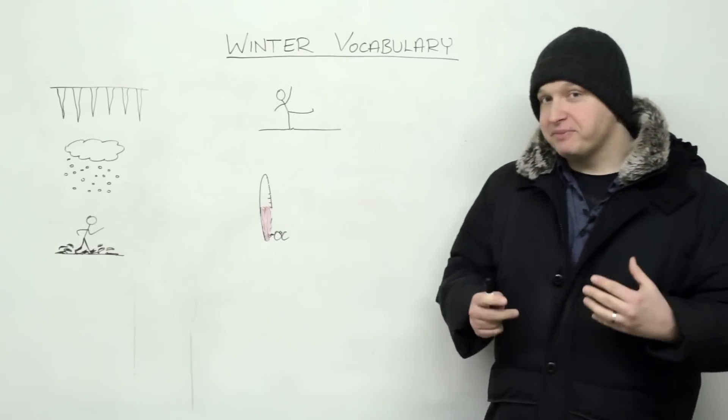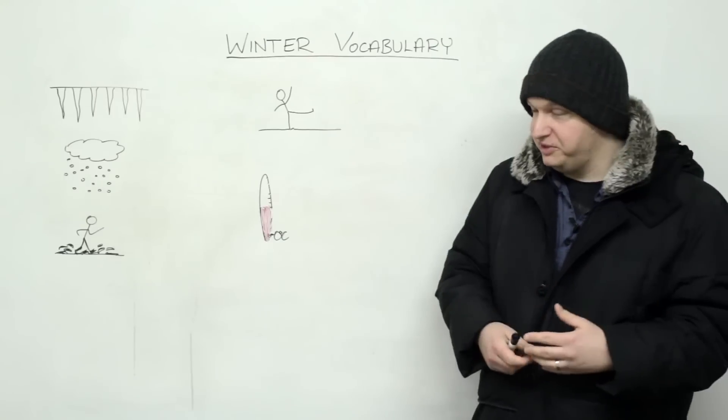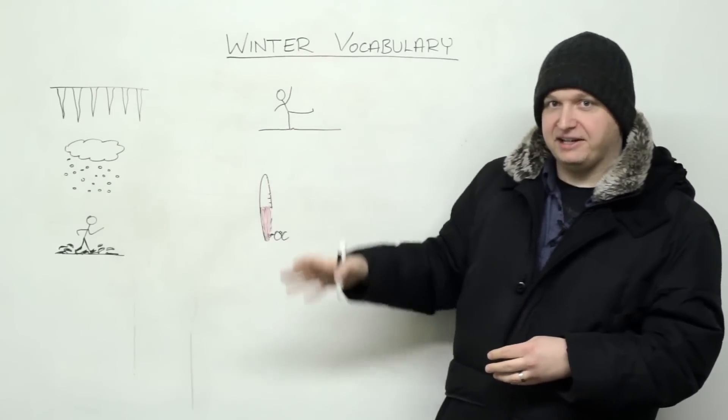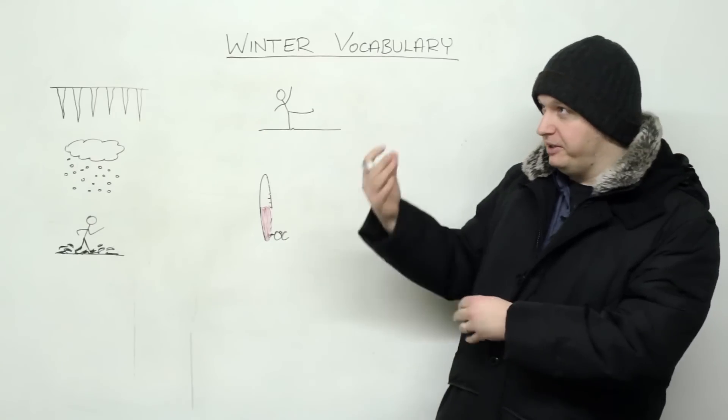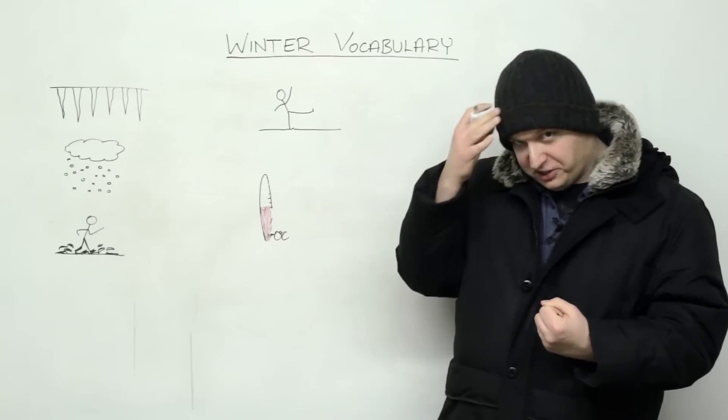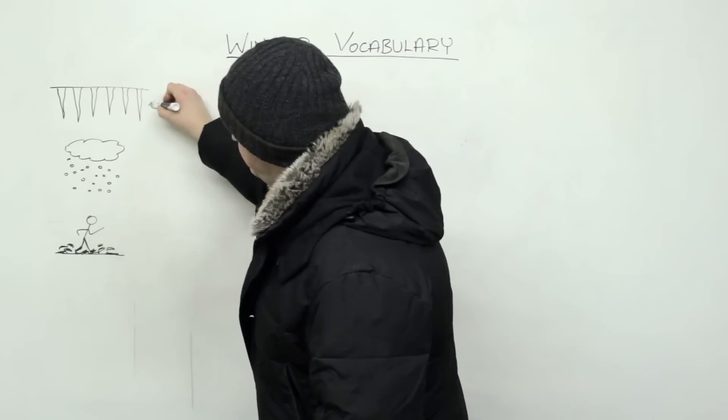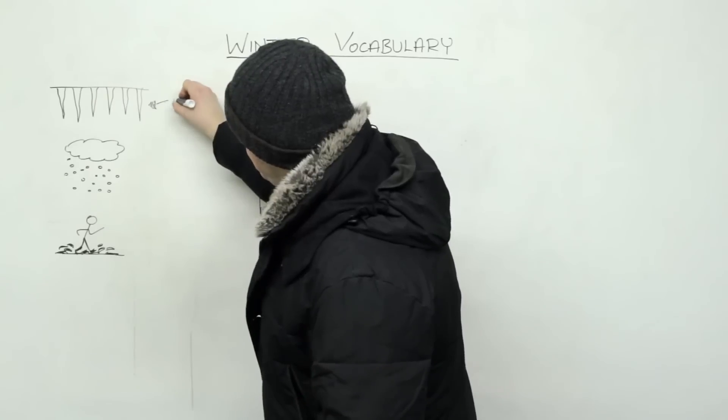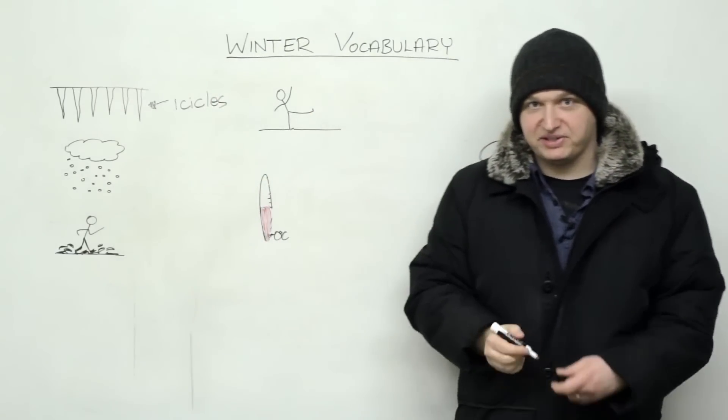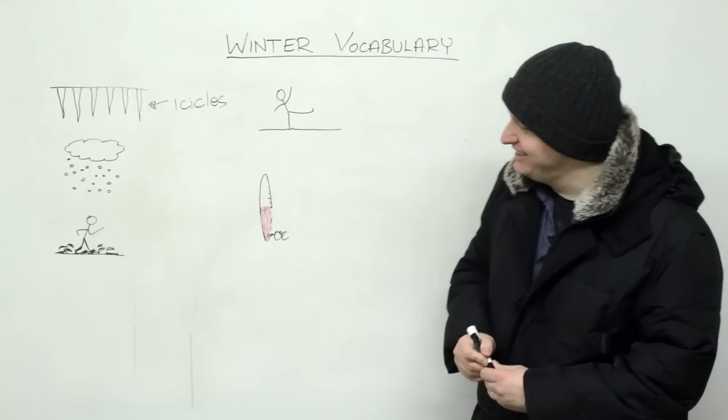Okay, so I have some pictures and they all represent things related to winter. So these pieces of ice that hang down from either a building, a roof, something, they're hard, they can hurt you. These are called icicles. So in the winter in Canada you must watch out for falling icicles from tall buildings. They can hurt you. It's not cool.